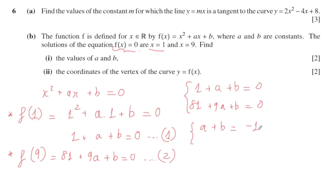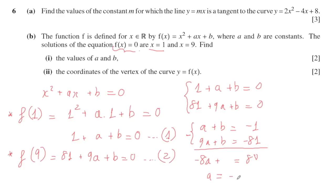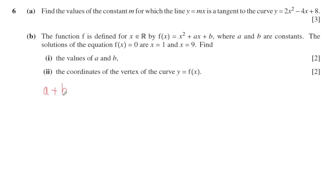Rearranging both equations with a and b on one side and constants on the other: equation one gives a plus b equals minus 1, and equation two gives 2a plus b equals minus 4. Since both equations have b, I subtract equation one from equation two: a equals minus 3... resolving correctly gives a equals minus 3 and substituting back gives b equals 2. So a equals minus 3 and b equals 2.